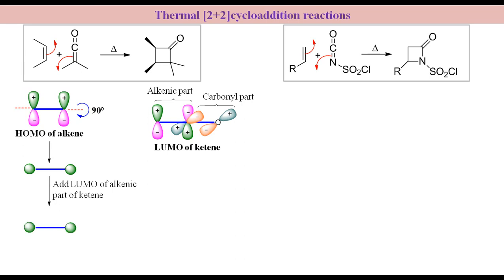Position the LUMO of alkenic part of ketene on top of HOMO of alkene at 90 degrees to it so that there is possibility of bonding interaction on both ends.